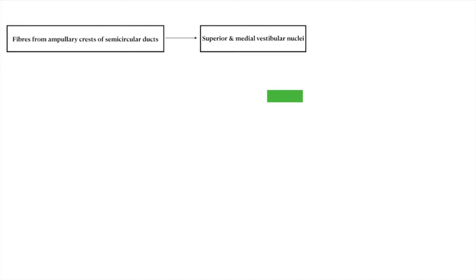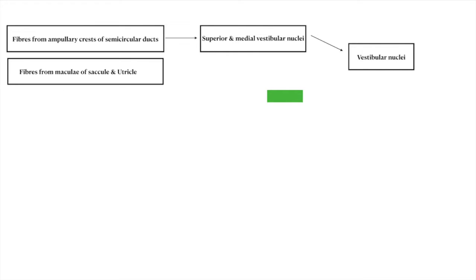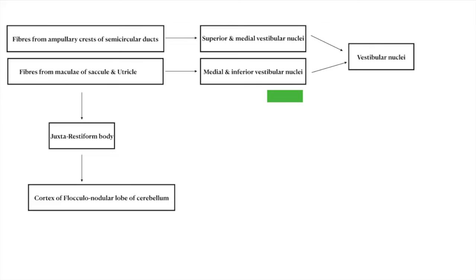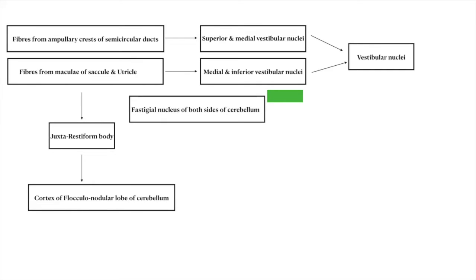The fibers from the ampullary crest of the semicircular ducts reach the superior and medial vestibular nuclei. The fibers from the maculae of the saccule and utricle reach the medial and inferior vestibular nuclei. The vestibular nucleus has four components: superior, inferior, medial, and lateral. Fibers from the maculae pass through the juxtarestiform body and reach the flocculonodular lobe of the cerebellum.